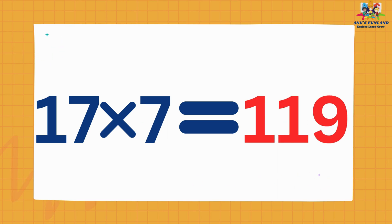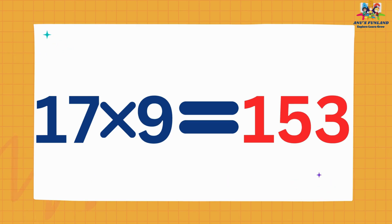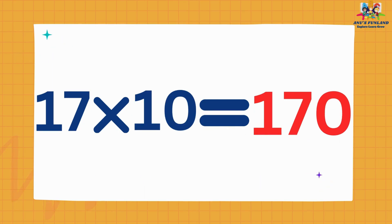17 sevens are 119. 17 eights are 136. 17 nines are 153. 17 tens are 170.